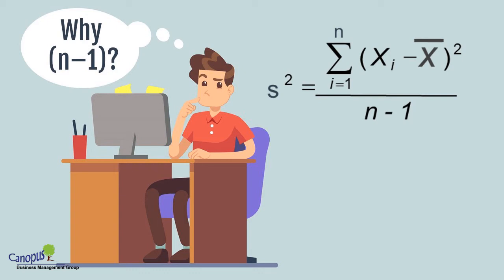Why do we use n minus 1 in the calculation of variance? If you have reached this video, you might already know that there are differences between the formulae for standard deviation or variance between that of a sample and that of a population. With some empirical experiments, I want to show you why using n minus 1 is practically useful.